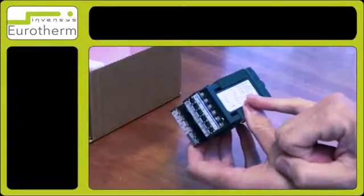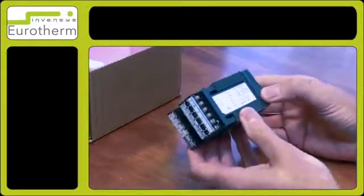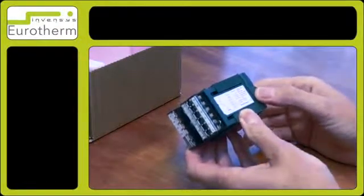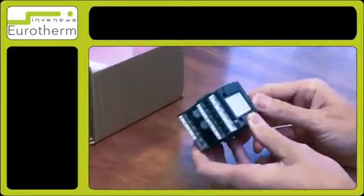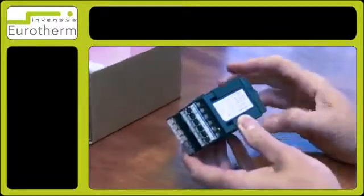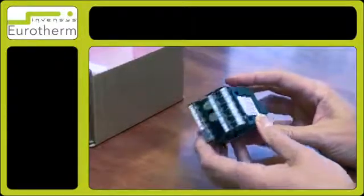Turning the instrument around, we have the wiring on the side of the label with the different details of the rear of the controller. This corresponds with the wiring to the back of the controller where you will be wiring this up for your application.